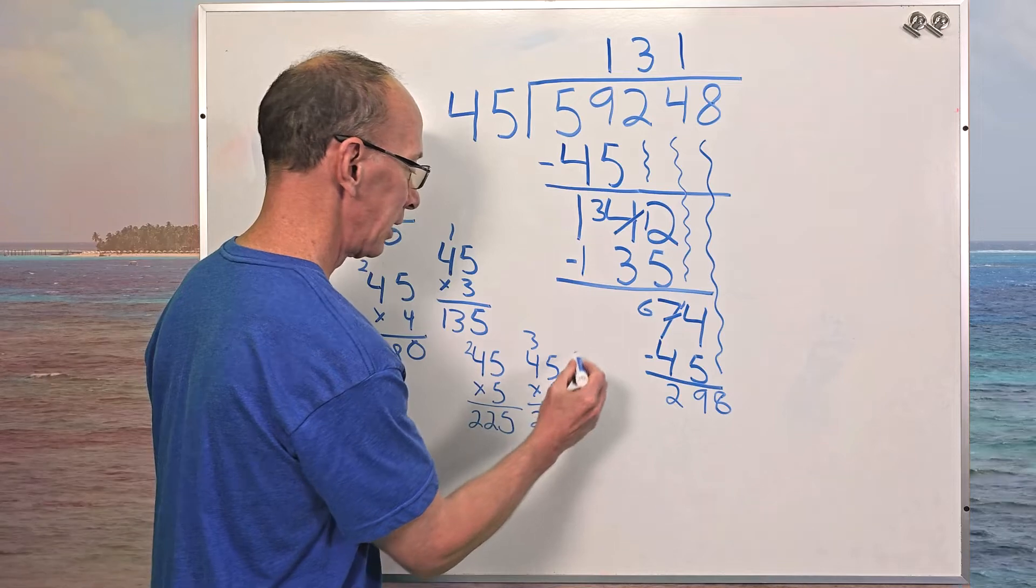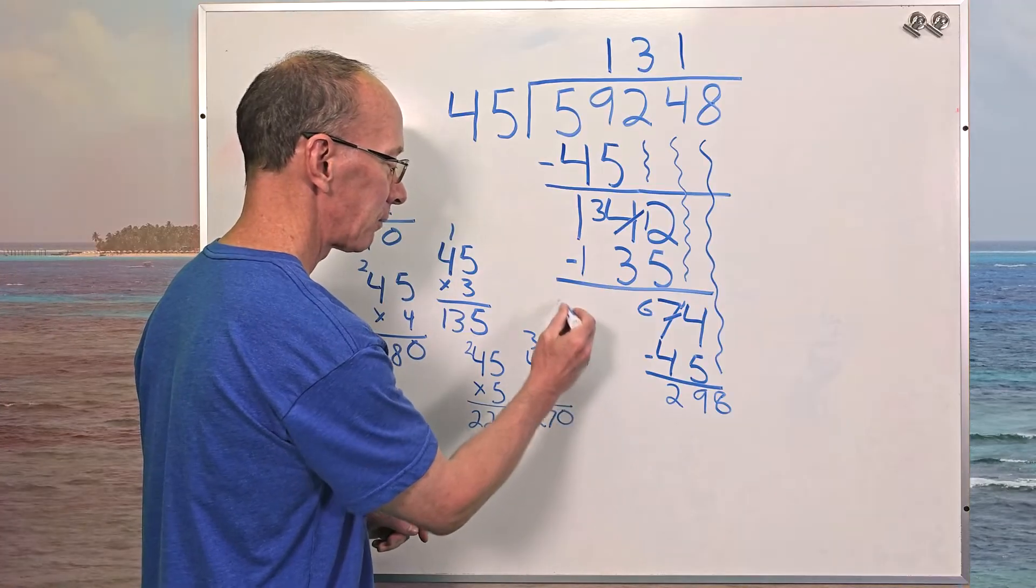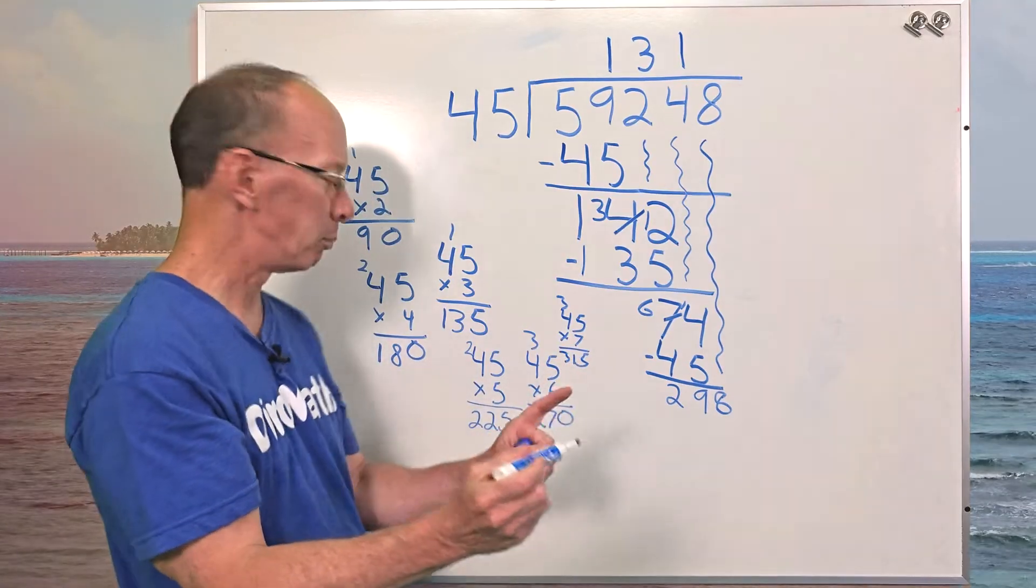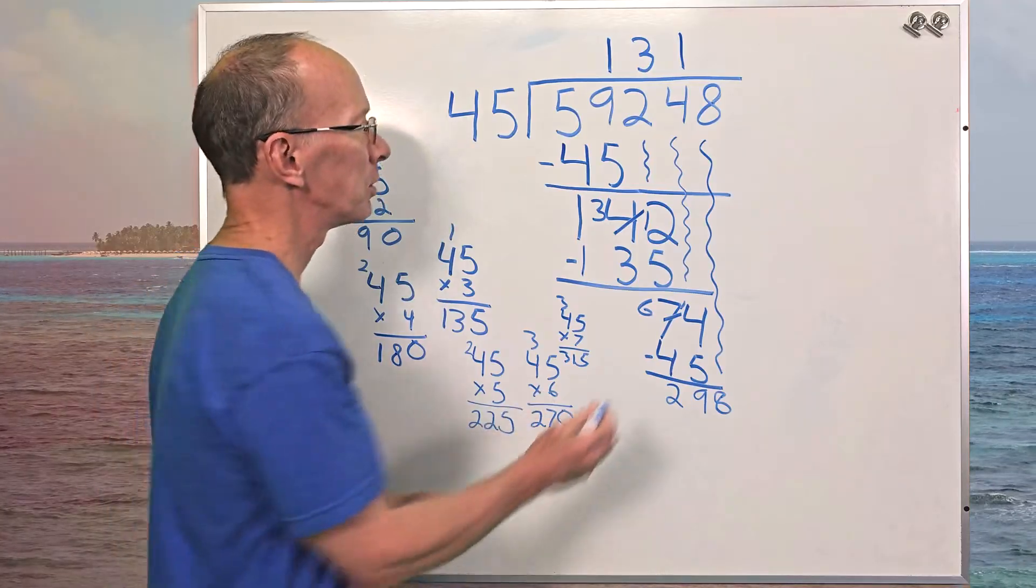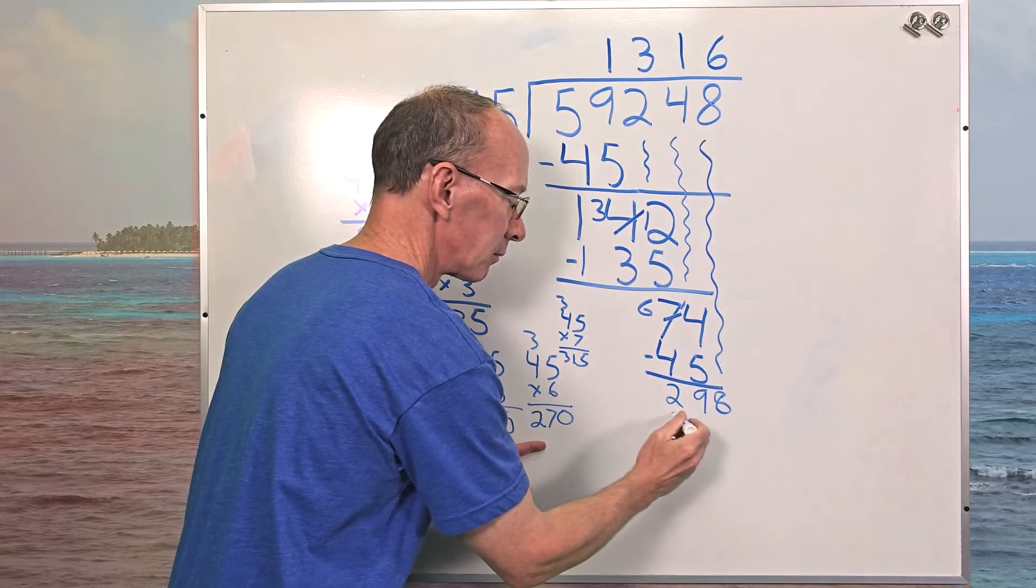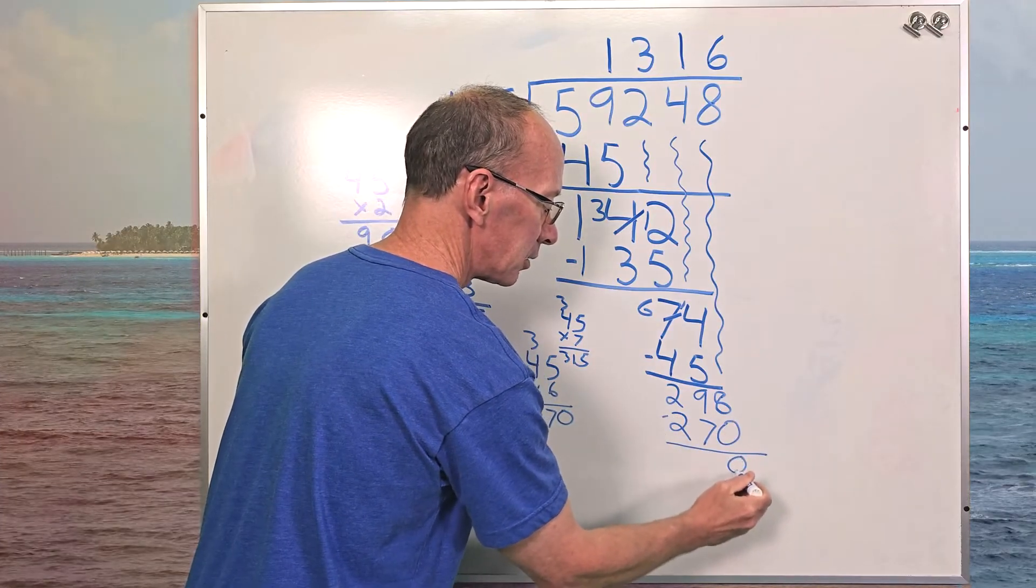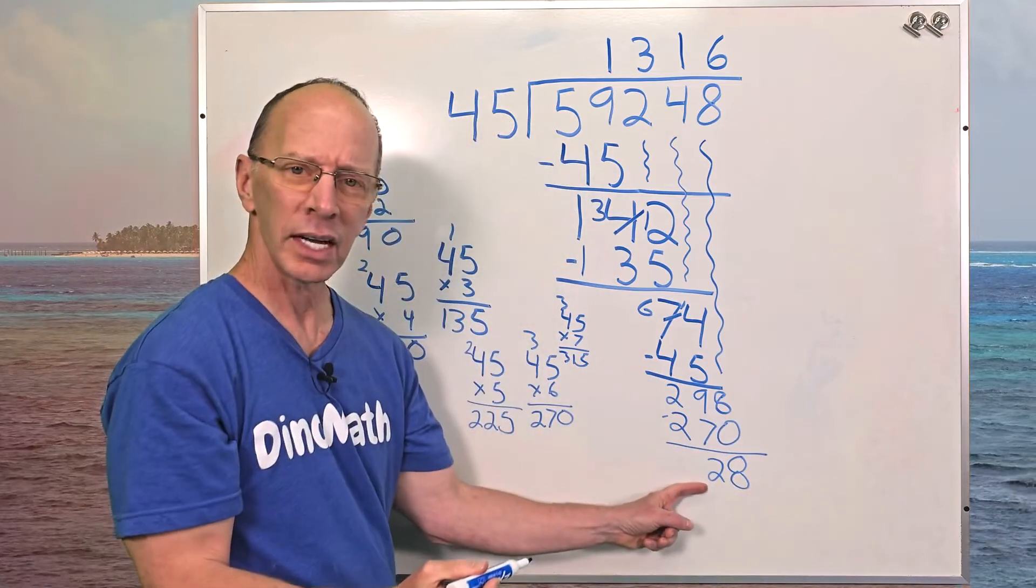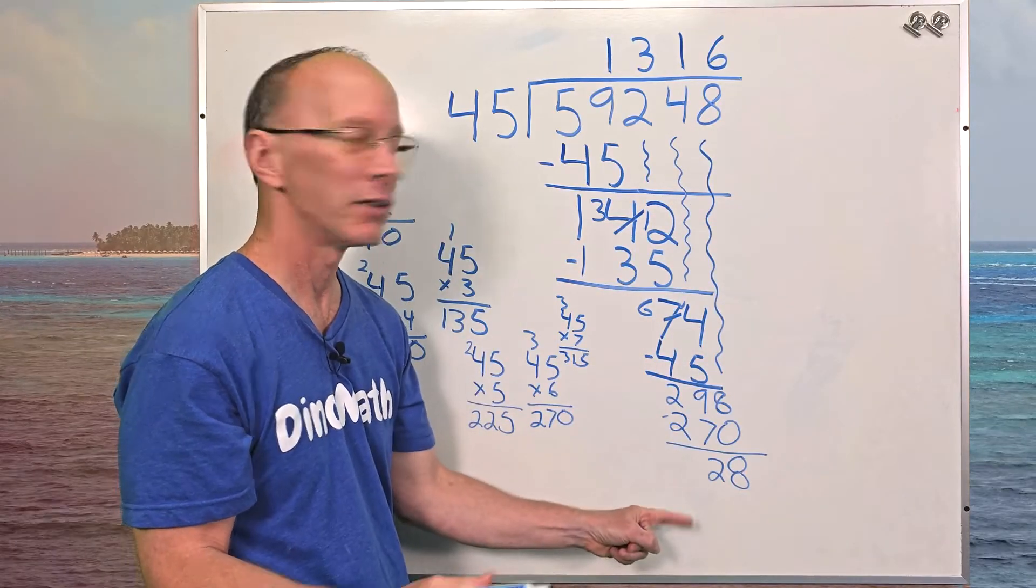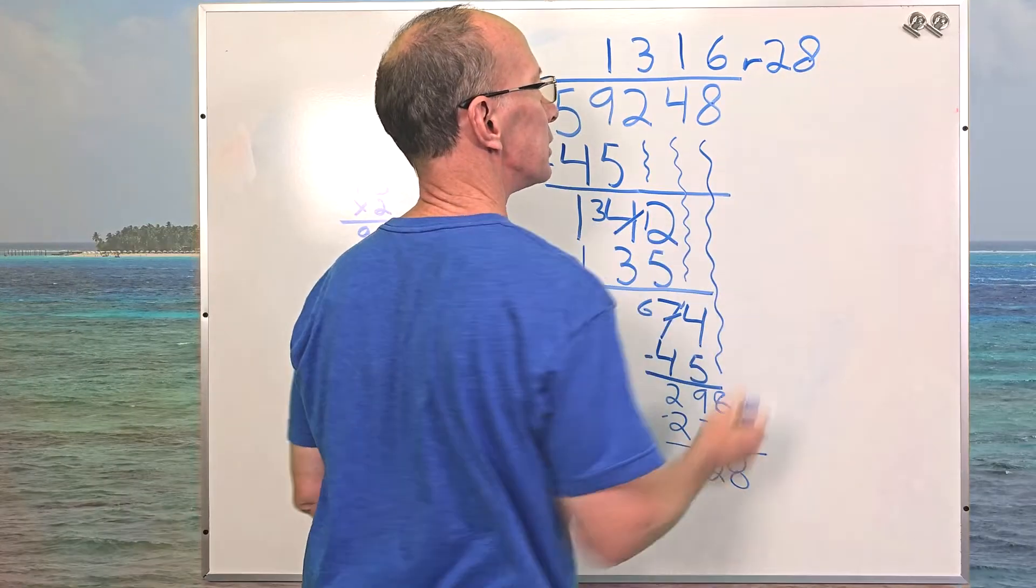If I did 45 times 7, I'll show you right here. 45 times 7, this would be too big. Five times 7 is 35, carry the 3. Four and 7, 28, 29, 30, 31. Too big. Got to stick with 6. So we're going to put 6 right over here. Six times 45 is 270, so I put 270 right here. Subtract, 8 minus 0 is 8. Nine minus 7 is 2. That is our remainder. We do not have any other number to drop down. That's the remainder right there. So I put an R right here, remainder 28 right there.